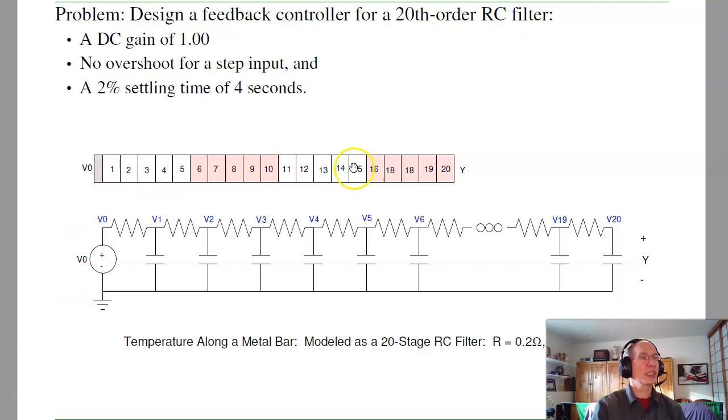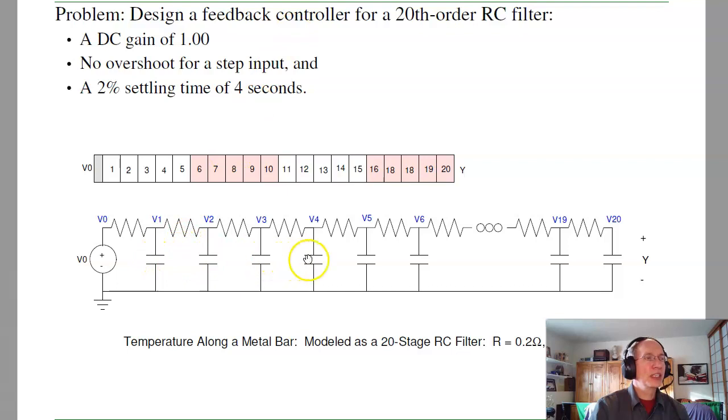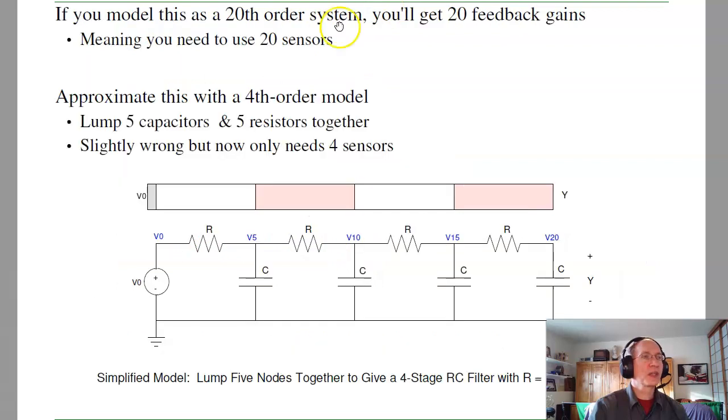Here it is, I've got my 20 element model for a soldering iron. The input is the temperature at the base, the output is the temperature at the tip. I'm going to model that using a 20 stage RC filter, where R is 0.1 ohm and C is 0.2 farads. The problem with full state feedback is you're going to get 20 feedback gains, which means I need to place 20 sensors along the soldering iron. That's unreasonable. So instead let's use a 4th order model. I'll take these resistors and capacitors, lump them together in groups of 5. Capacitors in parallel add, resistors in series add, and that winds up that R is 1 ohm, C is 1 farad.